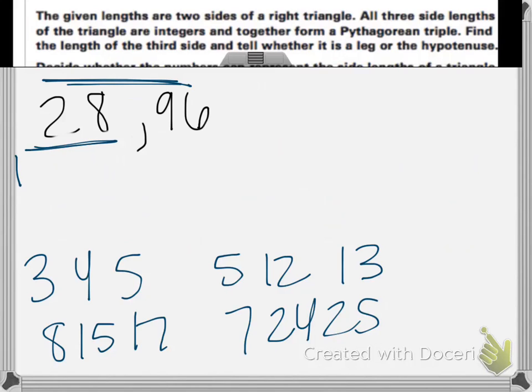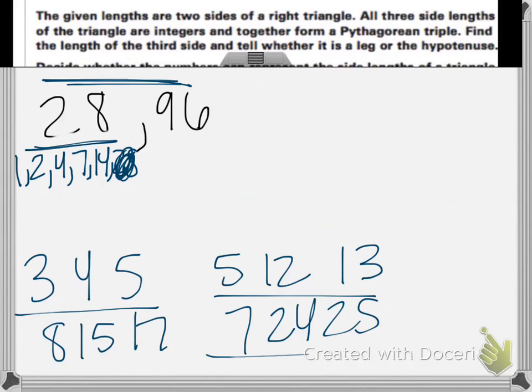So we have 1, 2, 4, 7, 14, and 28. So we want to first try to divide by our largest number, but we don't really need to do the number itself because the number 1 isn't included in any of our Pythagorean triples. So we'll start with 14.